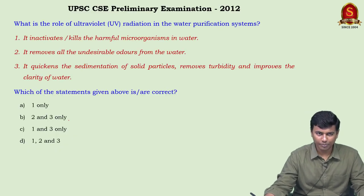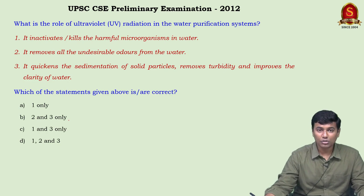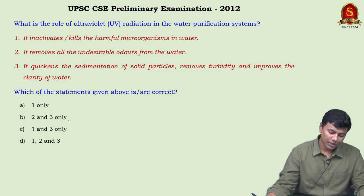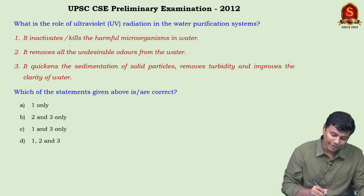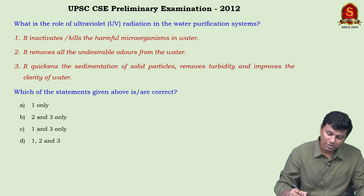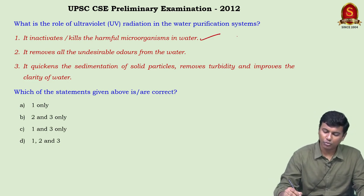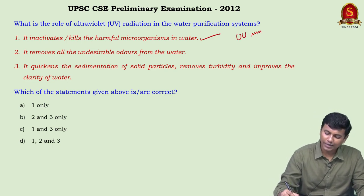UV radiation in water purification: UV radiation inactivates or kills harmful microorganisms. UV has a very short wavelength and human eyes are not sensitive to it, but it is effective at destroying pathogens in water.